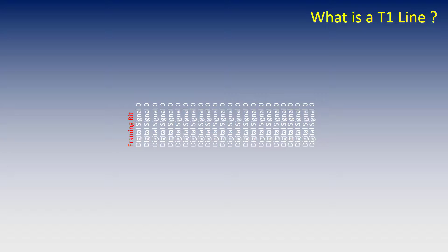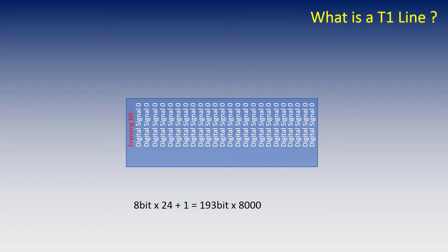And if we do the math, we have 8-bit multiplied by the 24 channels plus the framing bit equals 193 bit multiplied by 8,000, which is the amount of samples taken each second, gives us a total of 1,544,000, which in technical terms is written as 1.544 megabits per second.